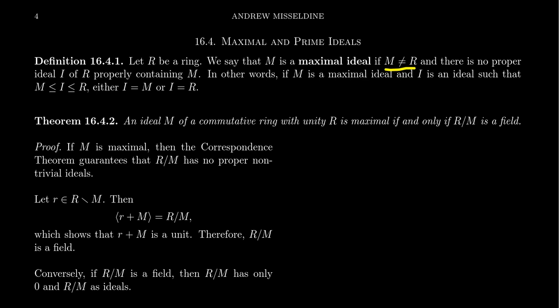Second, it can't be the whole ring. We've seen previously that the whole ring itself is an ideal, the improper ideal. So a maximal ideal, by definition, must be a proper ideal.